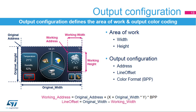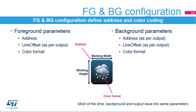The output configuration defines the working area for the Chrom-ART operation. The address and the line offset parameters are used to select which sub-area of the output is concerned. The background and foreground layers have their own configuration for address, line offset, and color format. This defines which area of the foreground and background layers are targeted by the Chrom-ART operations.